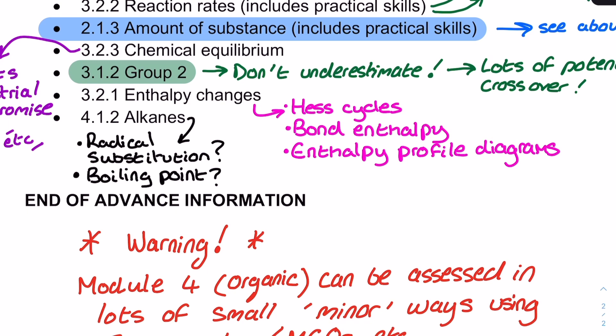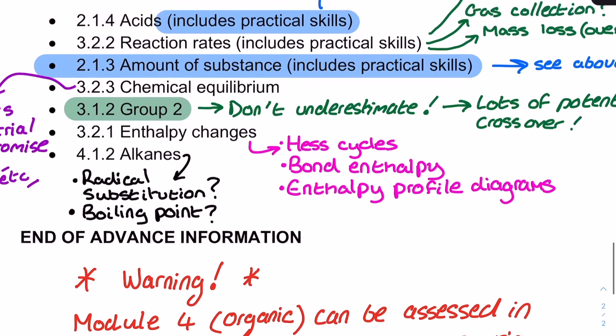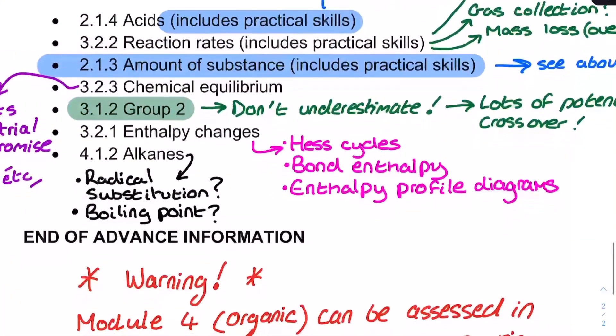The final thing on the list is not too surprising. It's alkanes. And it just reminds me that there's very little presence of Module 4 in a major way on this list. The alkanes could be anything from radical substitution to consideration of boiling point, which is affected by the branching. Please be careful when it comes to alkanes, because they can do quite a big question and link it to things like the bonding topic. They could link it to enthalpy. There's a lot of opportunity here for crossover. And I would remind you about that for all of these topics.